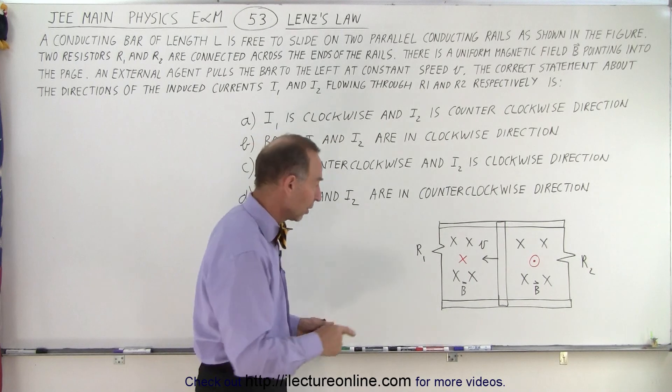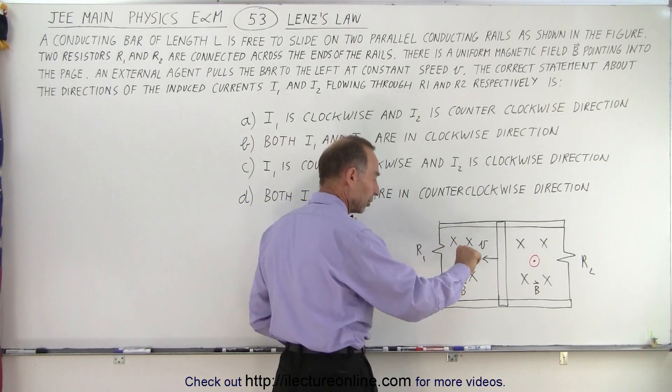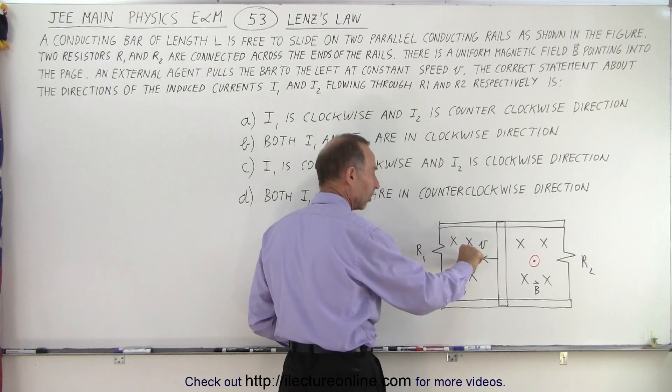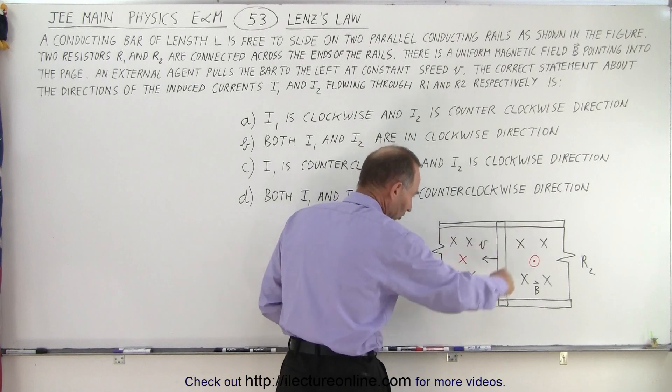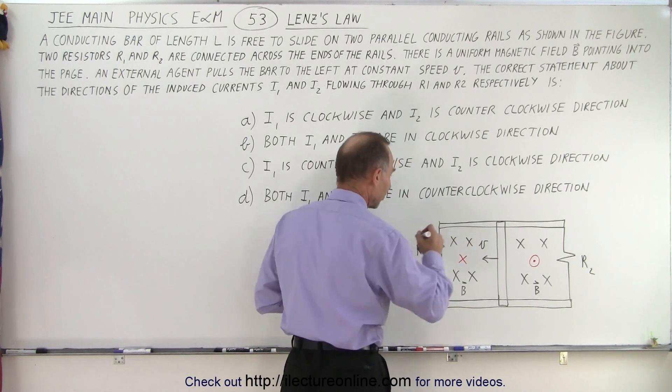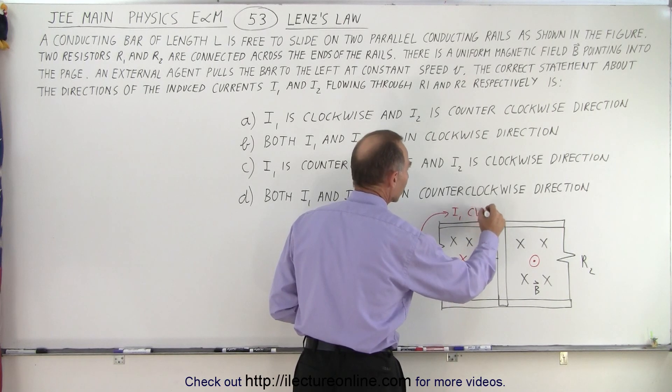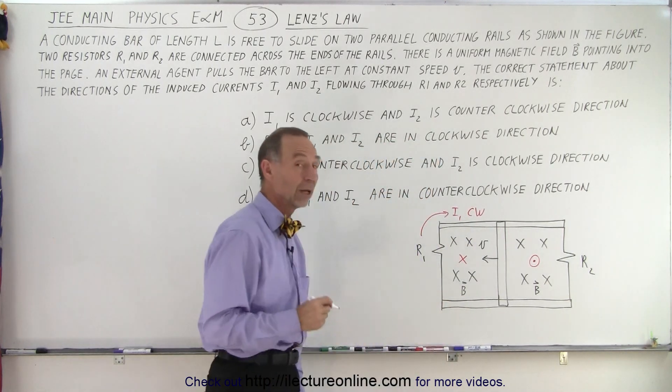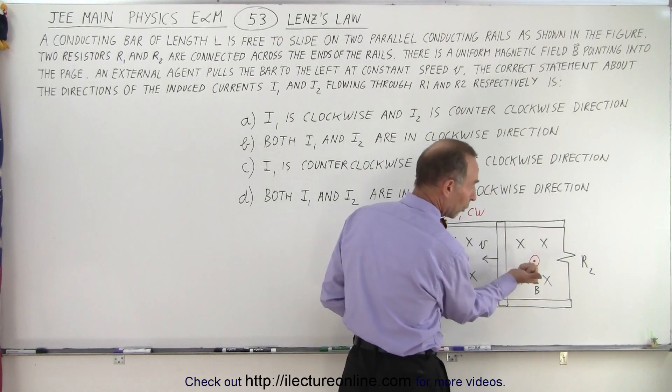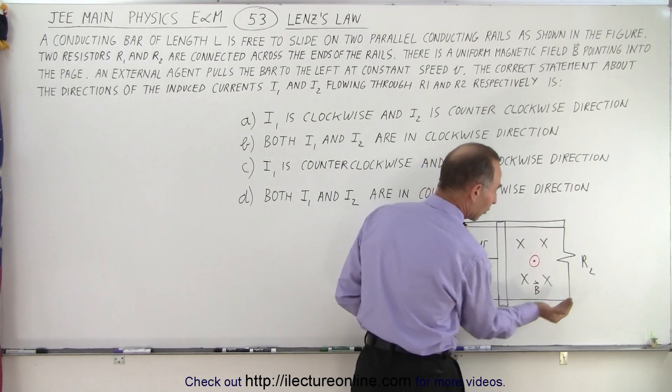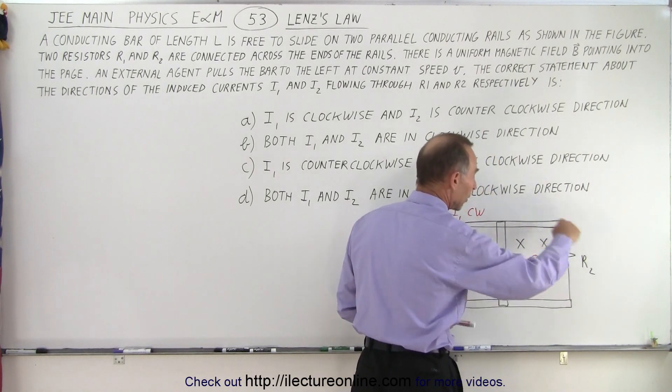Now we use our right hand. Notice that this is into the page, so we point our thumb into the direction of the induced magnetic field and our fingers will curl in the direction of the current, which in this case is going to be clockwise. So that means that I1 will be clockwise. On the other hand, here we have an induced magnetic field out of the page, so we point our thumb out of the page. Our fingers will curl in the direction of the induced current, which will be counterclockwise. So we say that I2 will be counterclockwise.